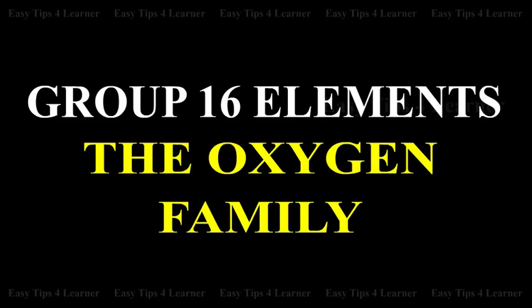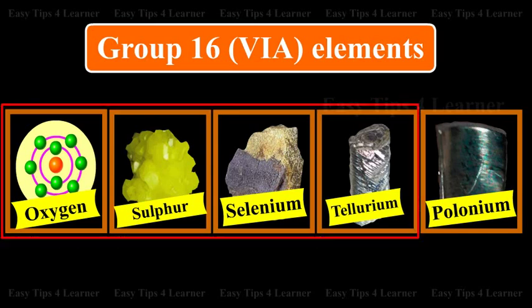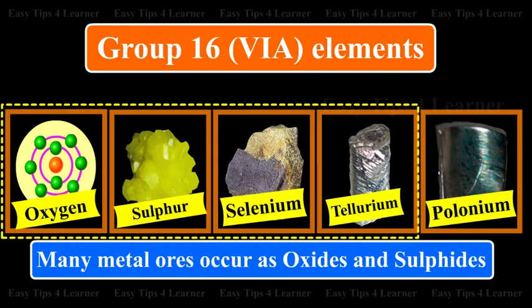Group 16 — The Oxygen Family. The Group 16, 6A elements are Oxygen, Sulphur, Selenium, Tellurium, and Polonium. The first four elements are collectively called chalcogens, or ore-forming elements, because many metal ores occur as oxides and sulphides.